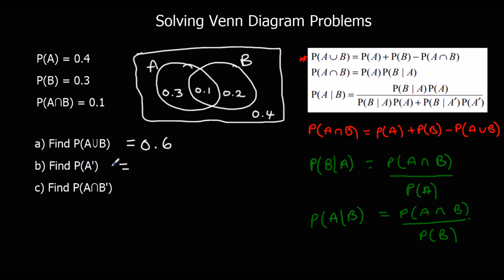The probability of not A is everything that's not A, so 1 minus P(A) = 0.6. Or from the Venn diagram, the sections not in A are 0.2 plus 0.4, which is also 0.6. For P(A and not B): the A sections are these two, the not-B sections are these two — the overlap is 0.3.